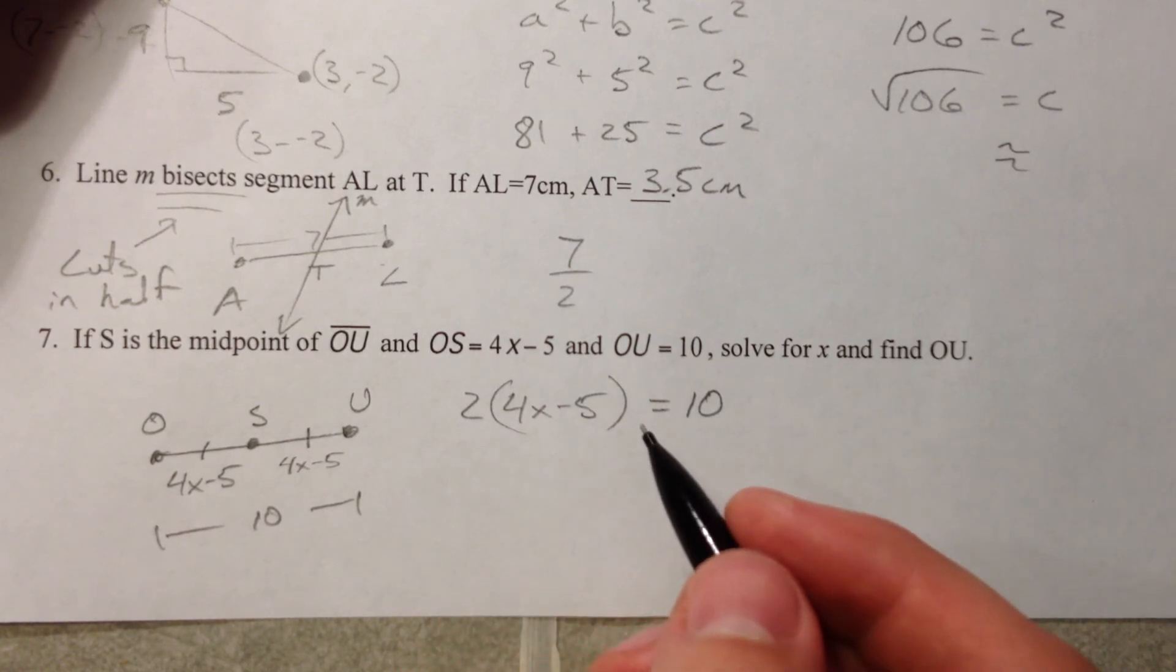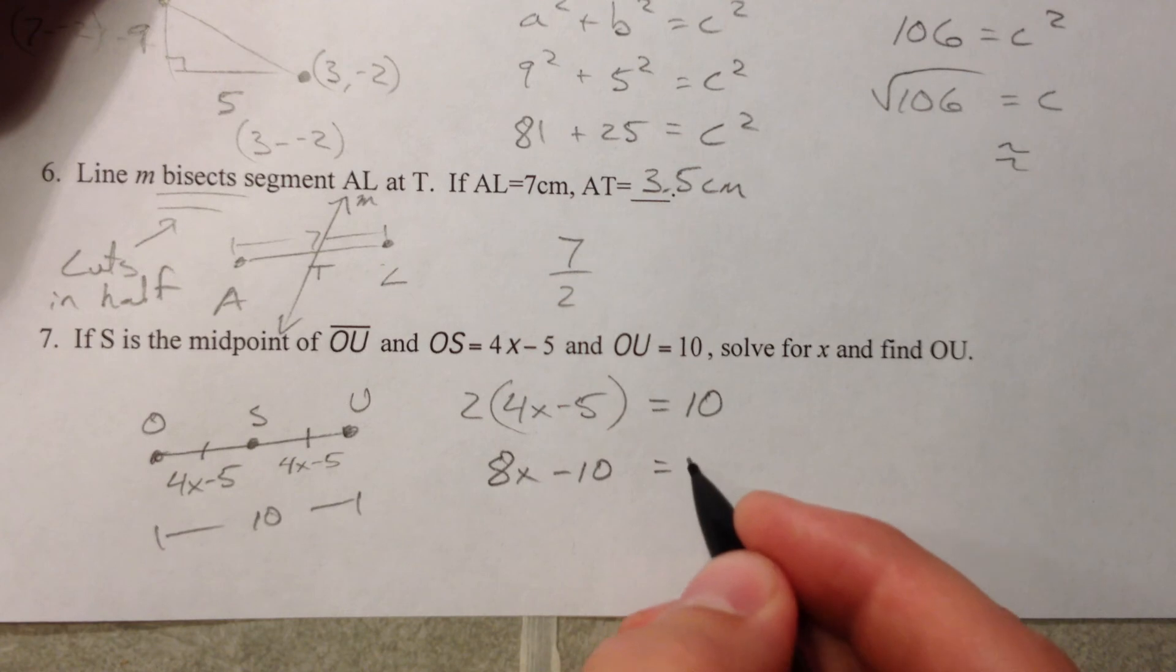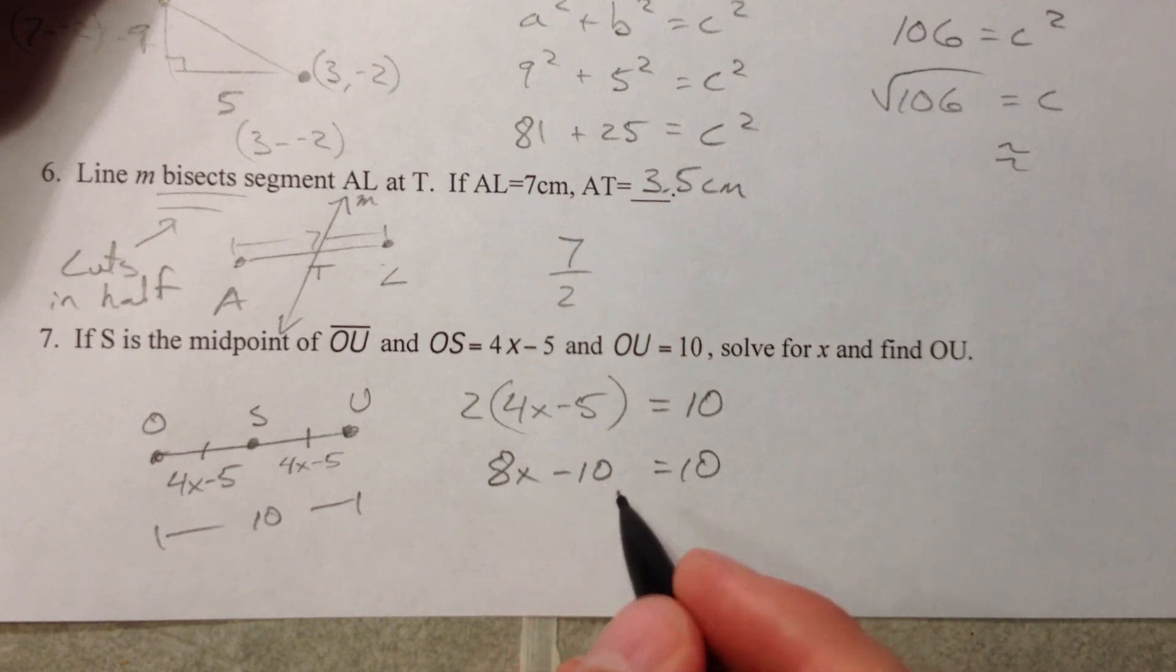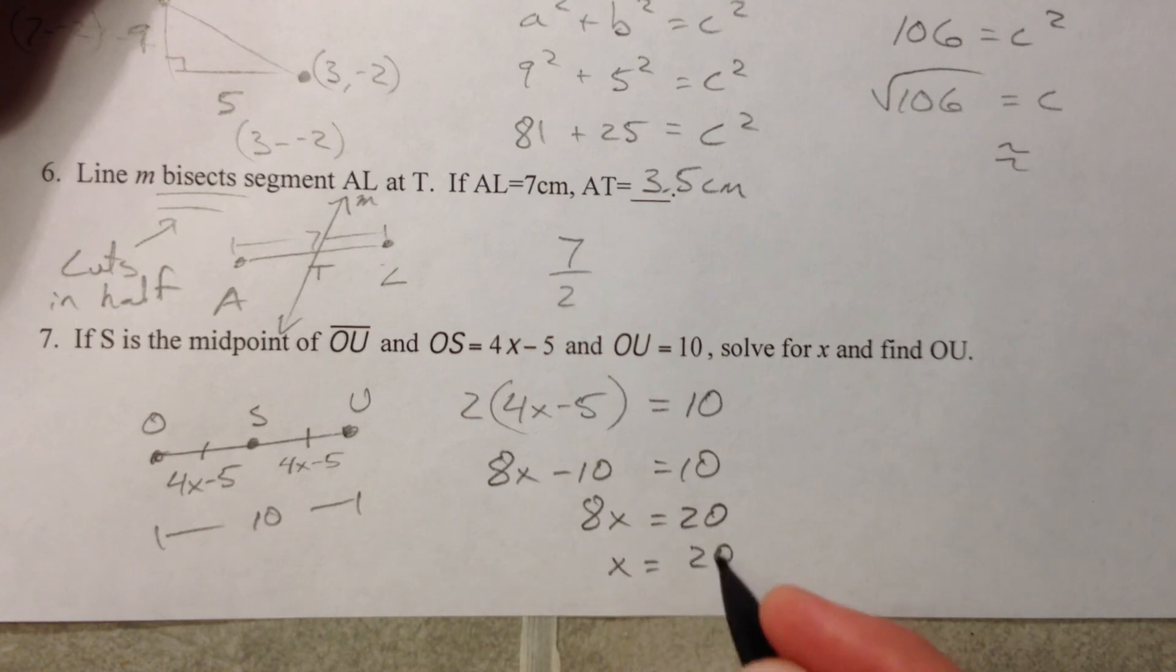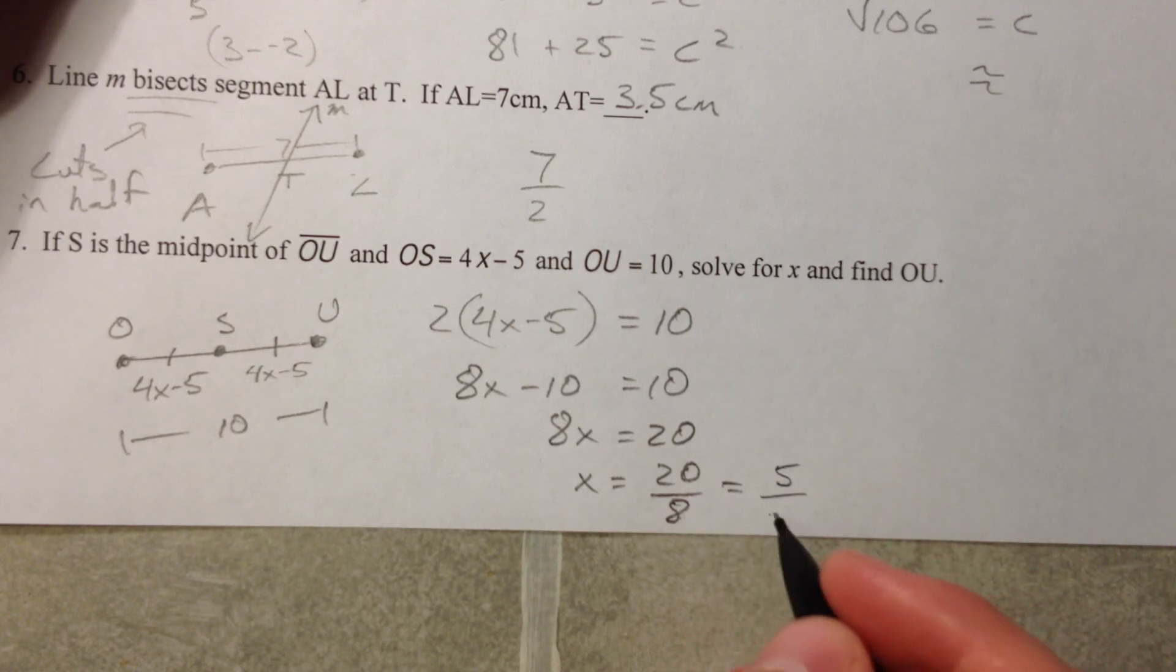And I can start solving this. And so add the 10 over I get 8X equals 20, divide by 8 I get 20 over 8, which can reduce, take out the 4, right, because they both have a 4. So 20 divided by 4 is 5 and 8 divided by 4 is 2. So 5 halves.